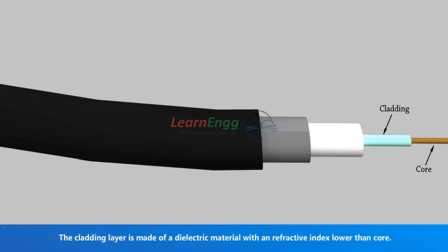Cladding: The cladding layer is made of a dielectric material with a refractive index lower than core. Thus, the refractive index of core is greater than the refractive index of cladding.